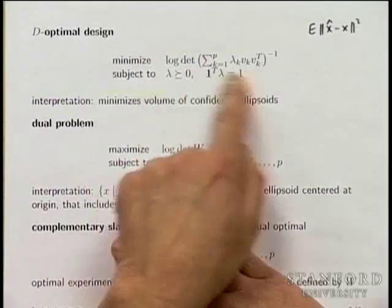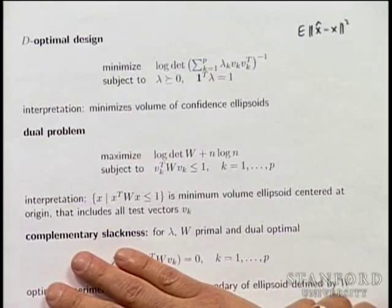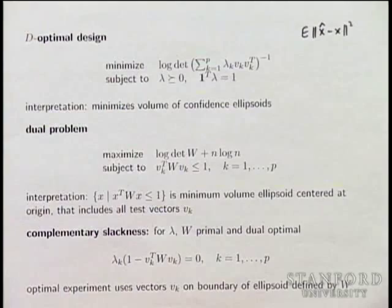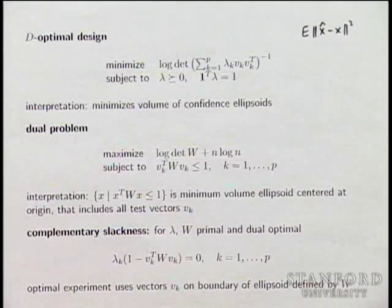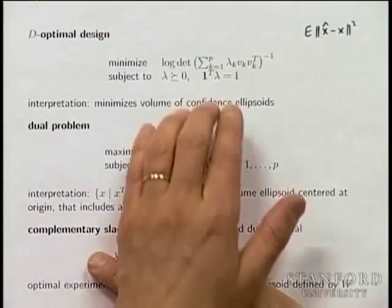In D-optimal experiment design, you minimize the log determinant of the covariance matrix. This is convex in the lambdas. This corresponds geometrically to minimizing the volume of the corresponding confidence ellipsoid. For positive definite matrices where you want them small, log determinant is something like the least squares analog — if you can't defend another measure, you might as well go with log volume.